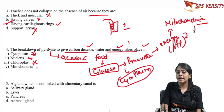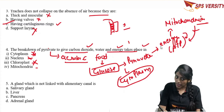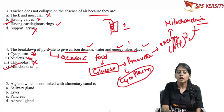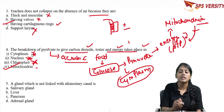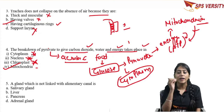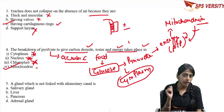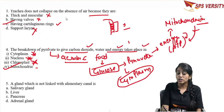Then pyruvate is broken down further in the mitochondria, producing ATP, carbon dioxide, and water. Mitochondria is the site where ATP is produced and is called the energy currency of the cell. Therefore, the breakdown of pyruvate to give carbon dioxide, water, and energy takes place in mitochondria. In cytoplasm — glucose to pyruvate; in mitochondria — pyruvate produces ATP, CO2, and water. This is our correct option.